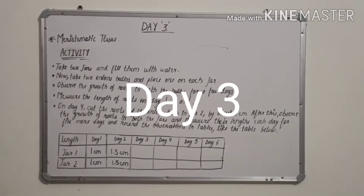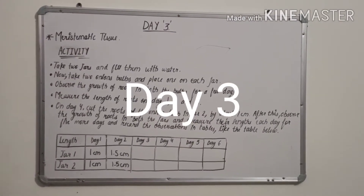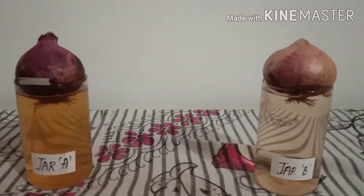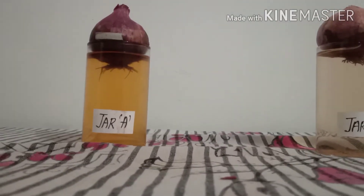Hello everyone, this is day three. Now we are going to measure the length of the roots of the onions. The first onion is two centimeters, as you can see, and the second is also two centimeters. So both the onions are two centimeters.